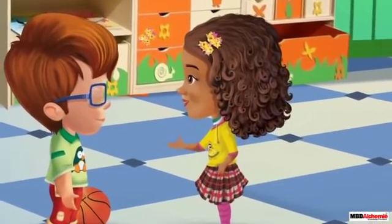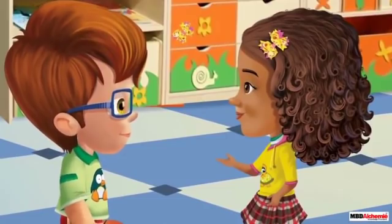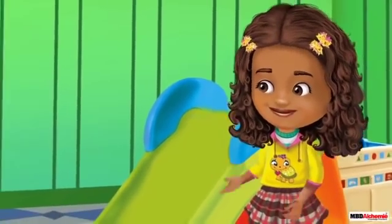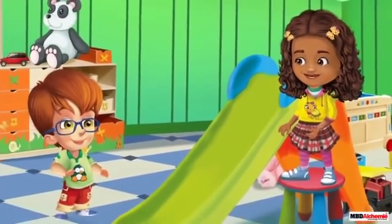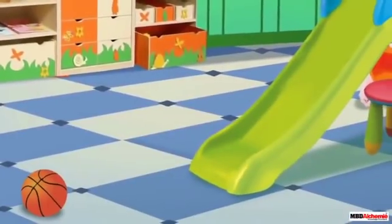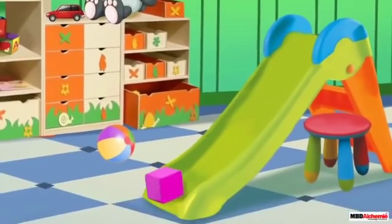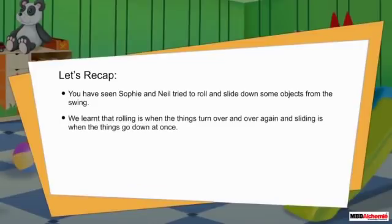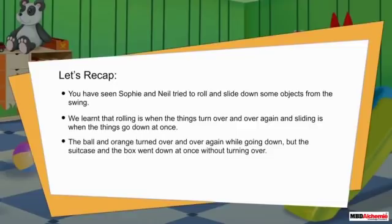It means that if I put an orange on the swing, it will roll down too. Try it out as well. What is the difference between rolling and sliding? Why did the box and suitcase slide down, but the ball and orange rolled down? That's an interesting question. Rolling is when things turn over and over again, and sliding is when things go down at once. So the ball and orange turned over and over again while going down, but the suitcase and the box went down at once without turning over.